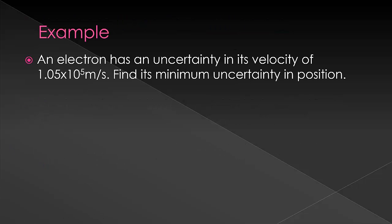Now let's do an example. An electron has an uncertainty in its velocity of 1.05 times 10 to the 5th meters per second, and I ask you to find its minimum uncertainty in position.